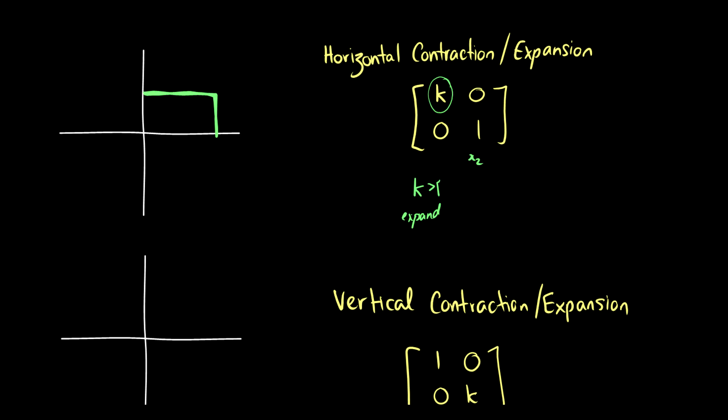But if k is between 0 and 1, then we contract. So let's say we take a half k, then our new box would only go halfway to x1 originally. If this was our original point x1, let's call this 1, then this is our k greater than 1, and this is our k between 0 and 1. So these are expanding and contracting in the horizontal plane.